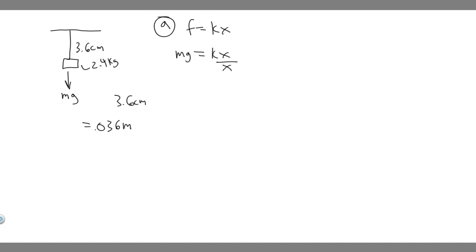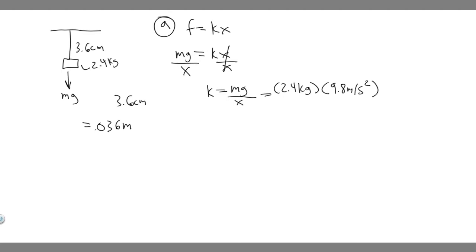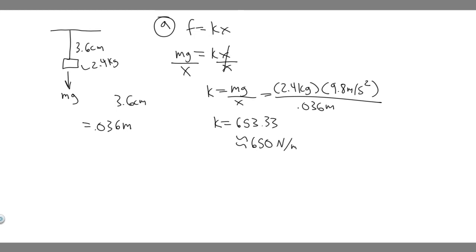We want K by itself, so we divide both sides by X. The spring stiffness constant is K = mg/X. So that's 2.4 kg multiplied by 9.8 m/s² divided by 0.036 meters. Plugging this into the calculator: 2.4 times 9.8, then divided by 0.036, gives K = 653.33. Rounding to 650, the spring stiffness constant is approximately 650 N/m. This is your answer to Part A.